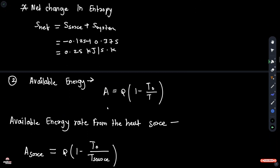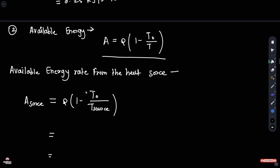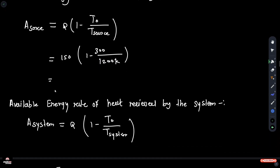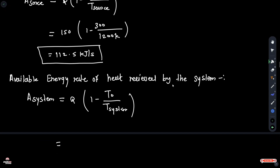Next, available energy. The formula for available energy is A = Q multiplied by the bracket 1 minus atmospheric temperature divided by source temperature. So the available energy rate from the heat source: A_source is equal to 150 multiplied by (1 minus 300 K divided by 1200 K), giving A_source equal to 112.5 kJ per second.